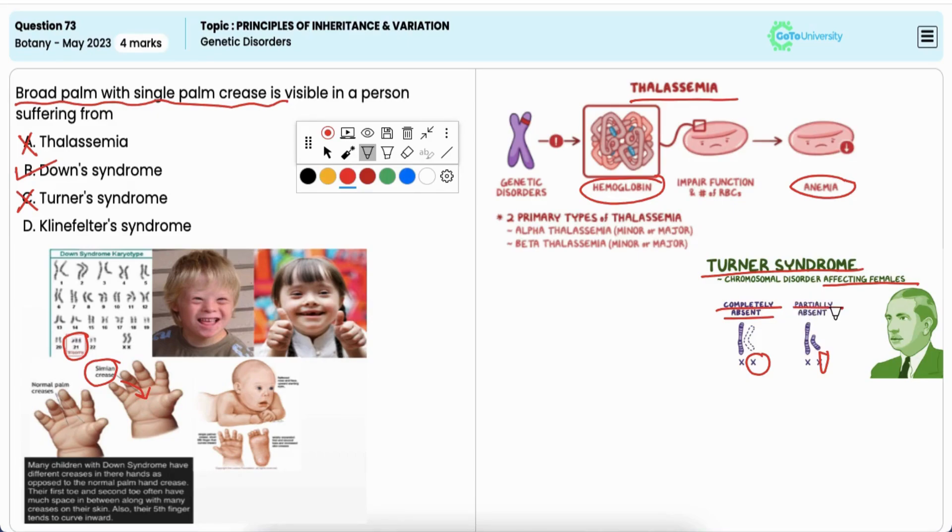Option D, Klinefelter syndrome: It is also incorrect. Klinefelter syndrome affects males who have an extra X chromosome, that is XXY. The syndrome may lead to symptoms like reduced muscle mass and facial hair, but it does not cause a single palmer crease.